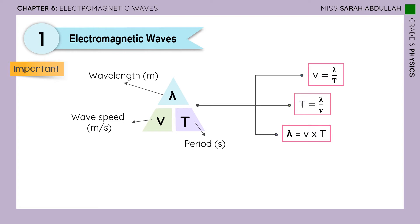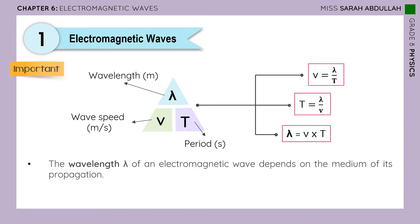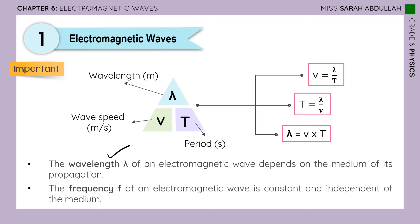Before we move on to the electromagnetic spectrum, let's review this important formula. We know that speed equals distance over time, but we also have the formula: speed equals wavelength over the period. An important note: the wavelength of an electromagnetic wave depends on the medium of propagation, so if the medium changes, the wavelength will change. However, the frequency is constant and independent of the medium, and since the period equals one over frequency, it is also constant and independent of the medium.